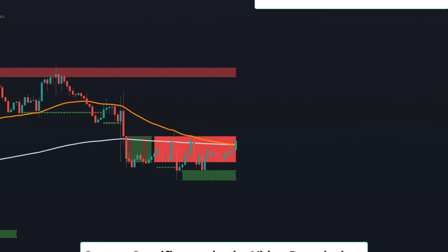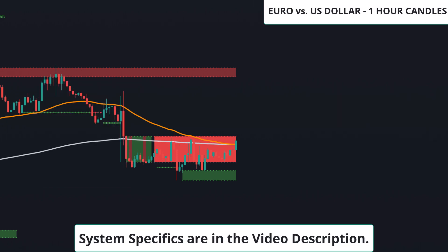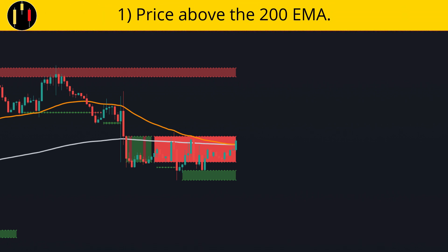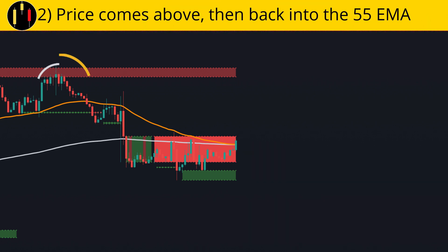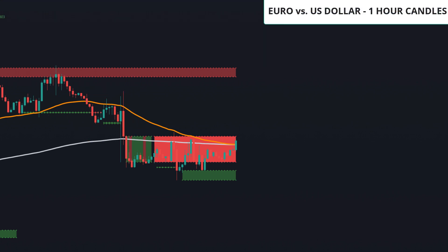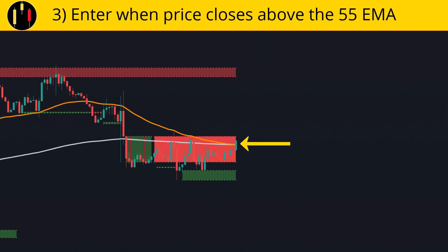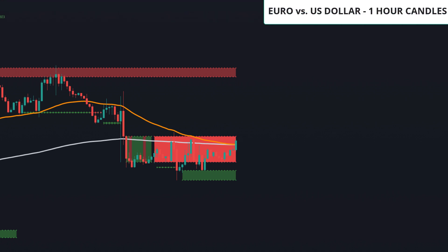Now let's get to the charts. This chart is Euro versus the Dollar. The rules for a long entry on Rebound and Pivot are: first, price closes above the 200 EMA; second, price then comes above and then comes back in to the 55 EMA; third, enter when the price rebounds and pivots off of the 55 EMA. All of that happens on this candle here.